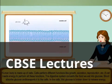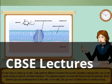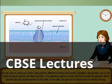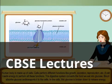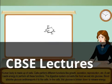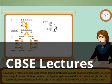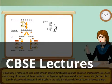The digestive system converts the food we eat into glucose. Blood absorbs glucose and transports it to the cells. In the cells, this glucose is broken down to release energy.